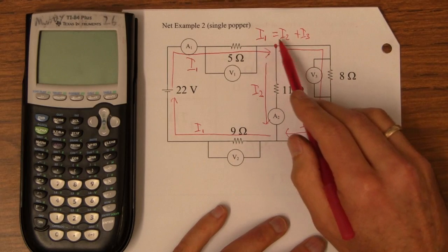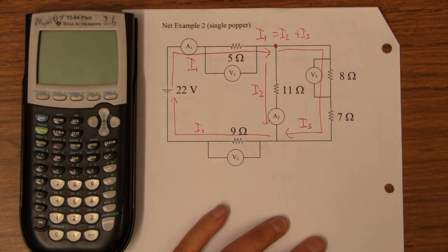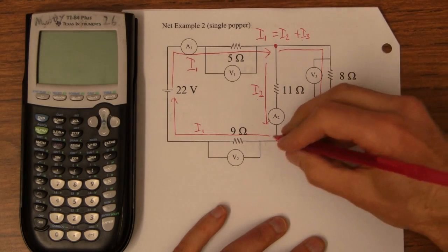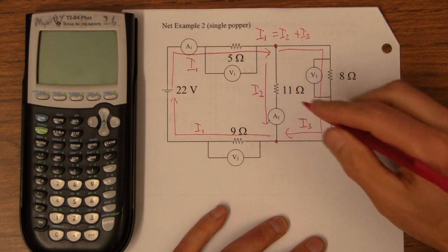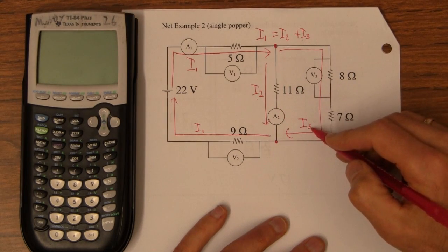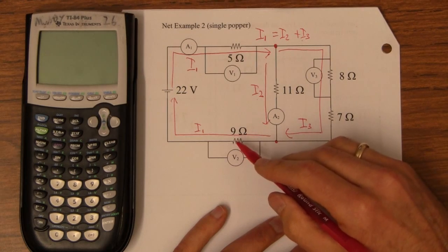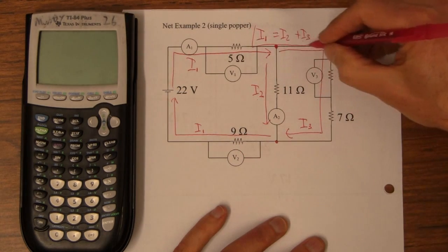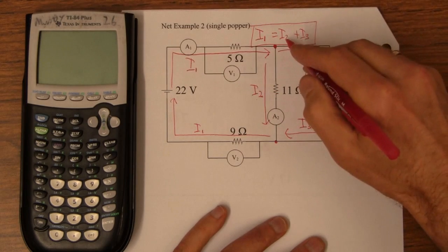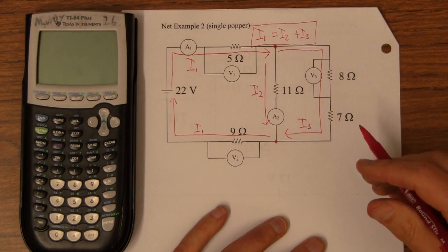So, if this is 3 amps, then that could be 1 amp and 2 amps. Now, if we look at this junction, we get that I2 plus I3 equals I1, and that's not a new formula. So, this is our equation that we get out of that.